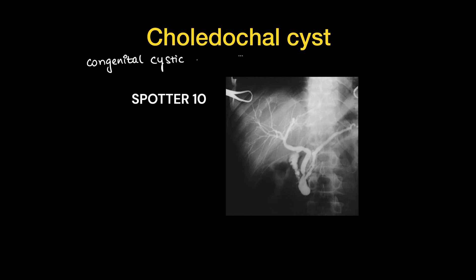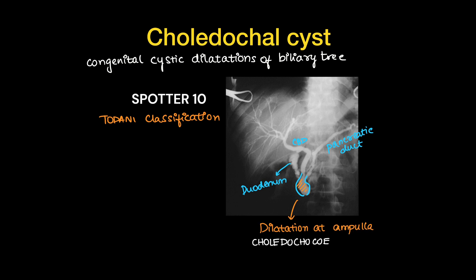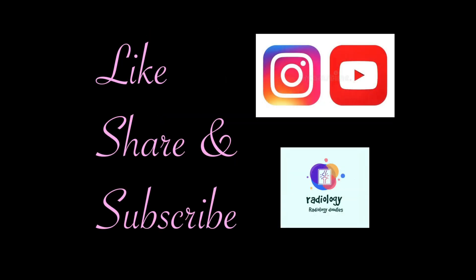This is congenital cystic dilatation of the biliary tree. Use the Todani classification for it. Here you can see the pancreatic duct and CBD are both dilated with dye in the duodenum, and you can see the dilated biliary tree at the ampulla. This corresponds to Type 3 of the Todani classification — a choledochocele. Please like and subscribe to our videos on YouTube and Instagram.